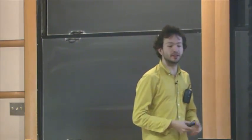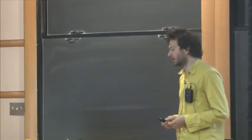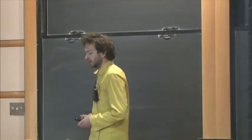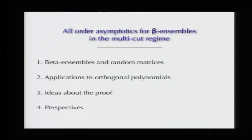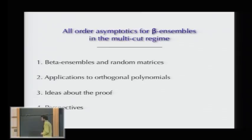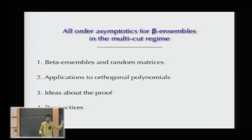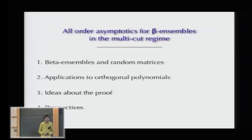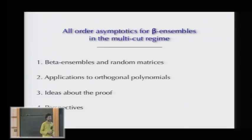This talk is about asymptotic expansion in beta ensembles, which is a special case of random matrices—specifically a random matrix model—especially in the multi-cut regime. I will first explain the model, state the results, and describe the history. Then I'll describe an application to an exactly solvable case, where we use these results to obtain results on orthogonal polynomials and the Toda chain. Finally, I'll describe some ideas about the proof and discuss generalizations.